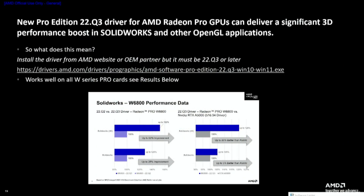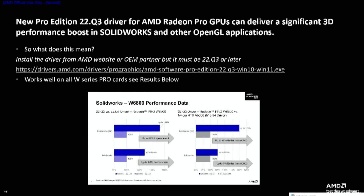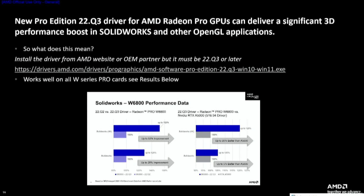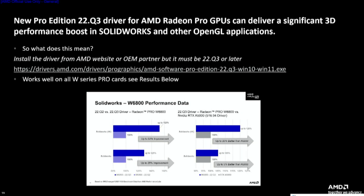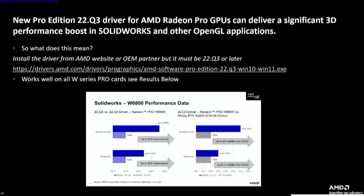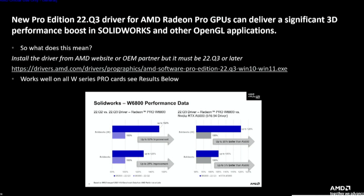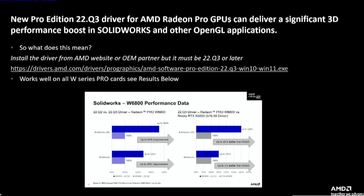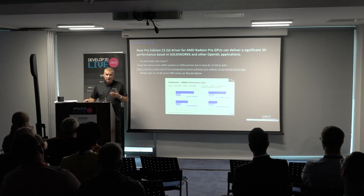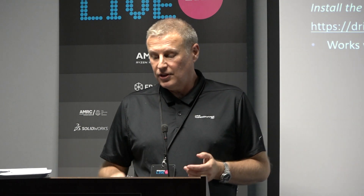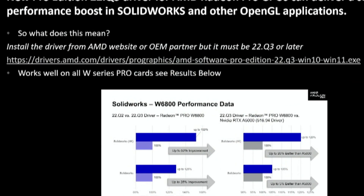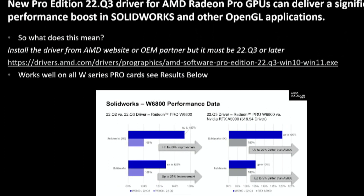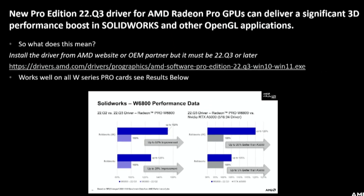Going back to that laptop example — there is a new AMD pro driver, 22.Q3, that we've just launched. If you download this driver on any AMD card, it will give a boost in performance. In some examples, it's 150% — meaning 50% extra performance. Why? Because we've re-engineered the actual driver, completely taken it apart and rebuilt it for modern hardware. For drawing views inside SolidWorks, tests showed it was 50% faster from one driver to the next. 2D drawing views take time, so 50% faster is a big change — and it's just a driver update.